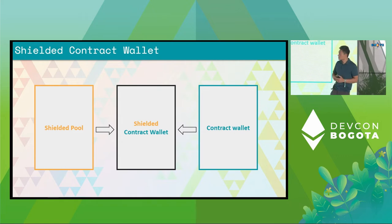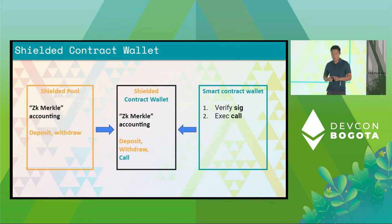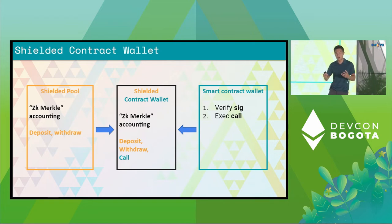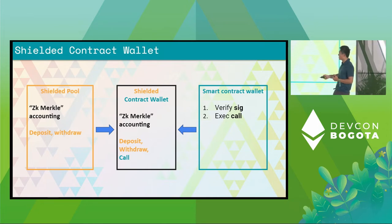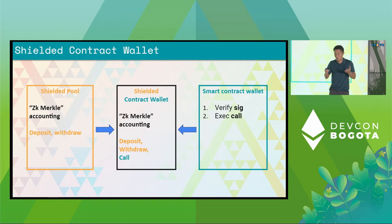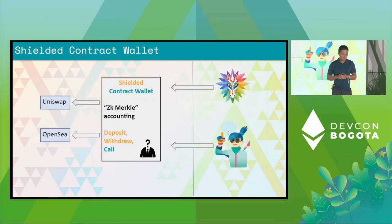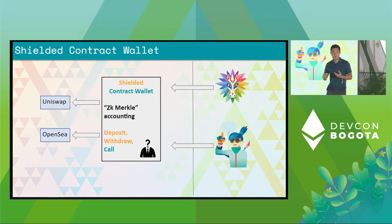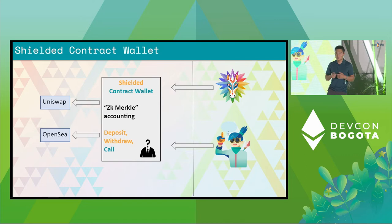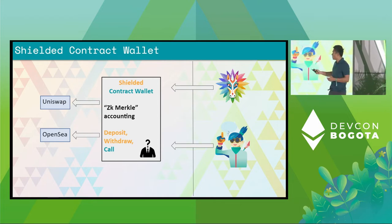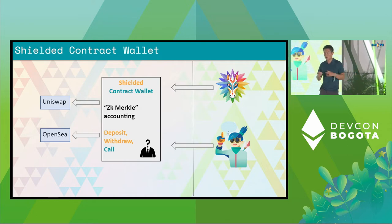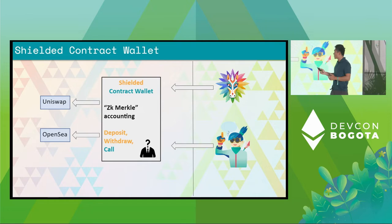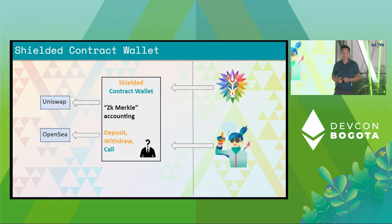How does this actually work? For shielded pools, as we said, it supports deposits and withdrawals. For contract wallets, you support arbitrary calls. When you put them together, you support deposits, withdrawals, and crucially, you can use them to call any DApp. Here's the picture: it's going to be a smart contract sitting on Ethereum where it allows any user to enter this ecosystem, and once they enter, they're able to use it as if it's a MetaMask wallet. When different users submit transactions, they'll be reflected on chain. So if you want to call Uniswap or OpenSea, it should just work. And on Etherscan, you have no idea who's actually behind the scene doing this operation.